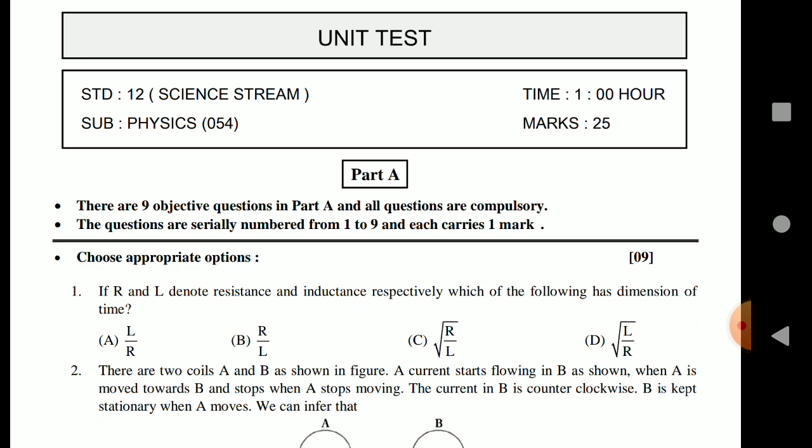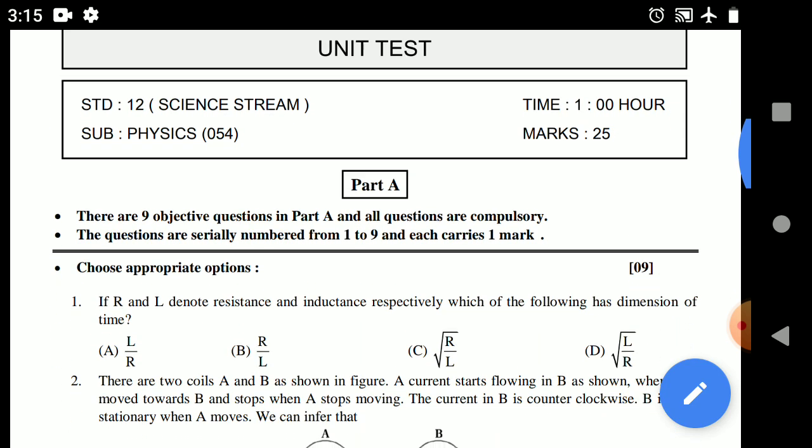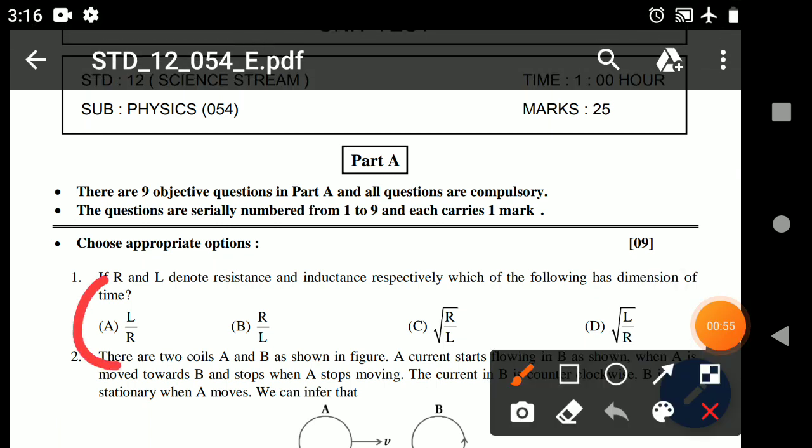Let's start. There are nine objective questions in Part A and all the questions are compulsory. First is choose the appropriate option. First thing is, if R and L denote resistance and inductance respectively, which of the following is dimension of time? The answer is option A, L upon R.